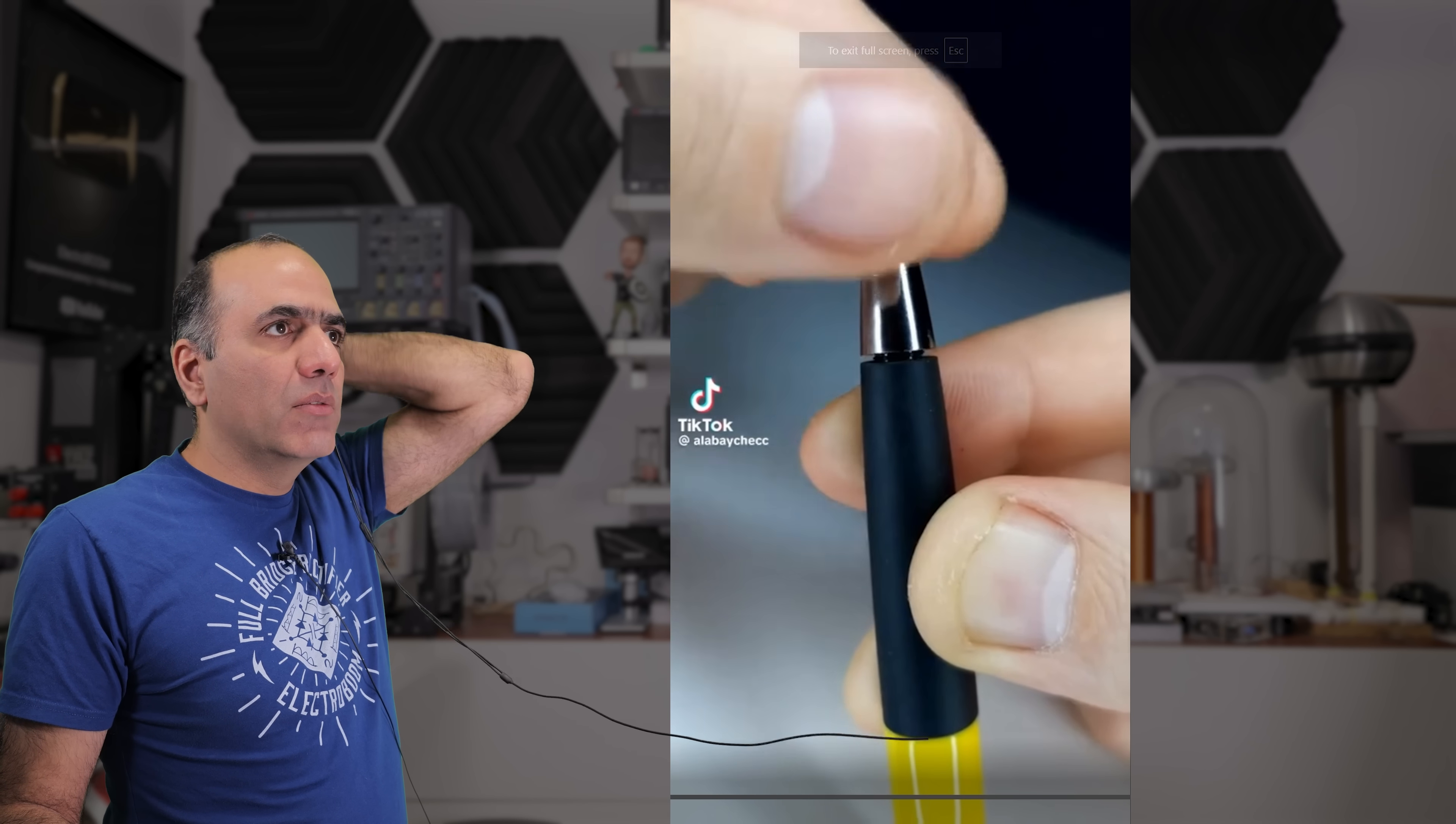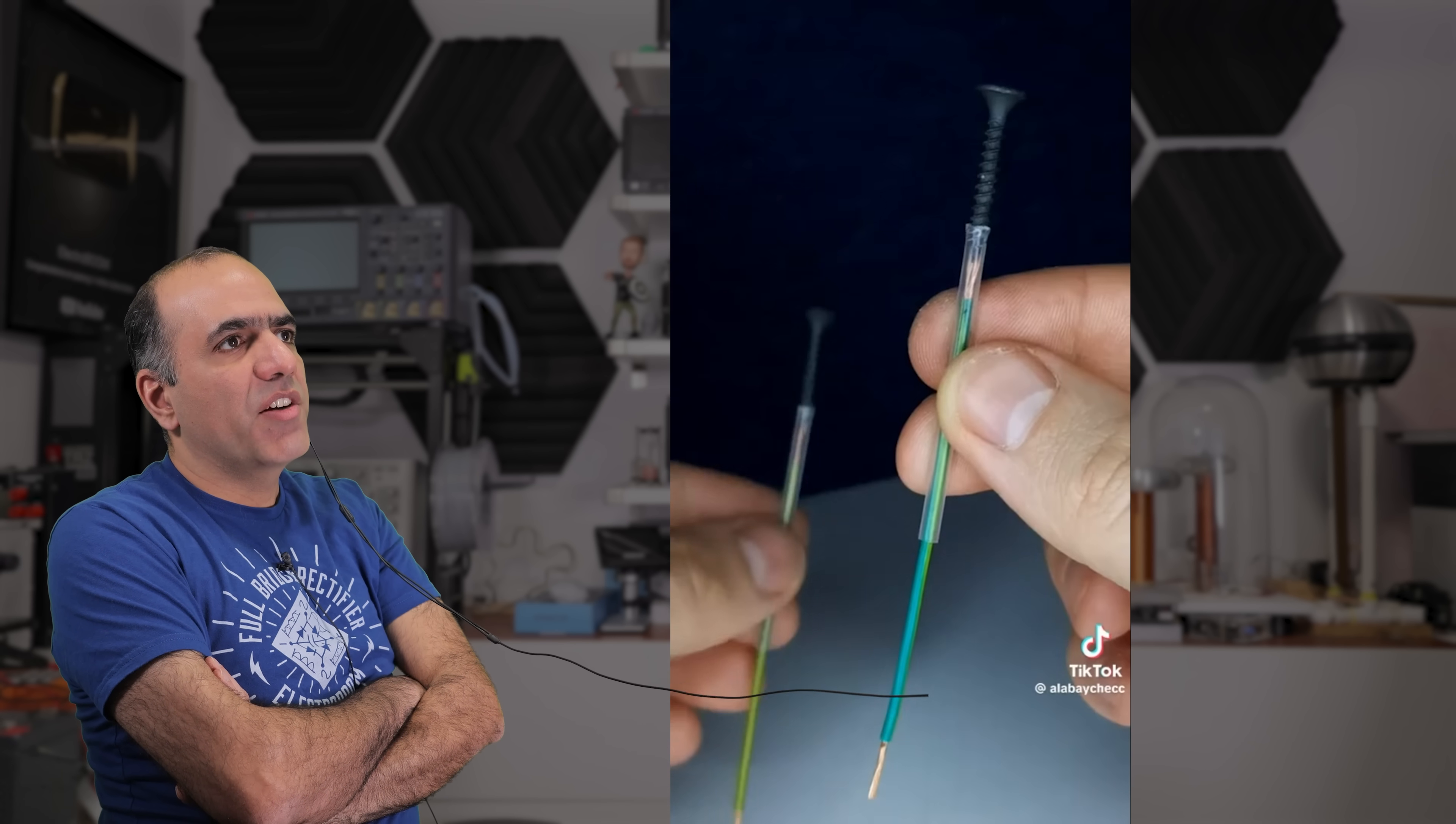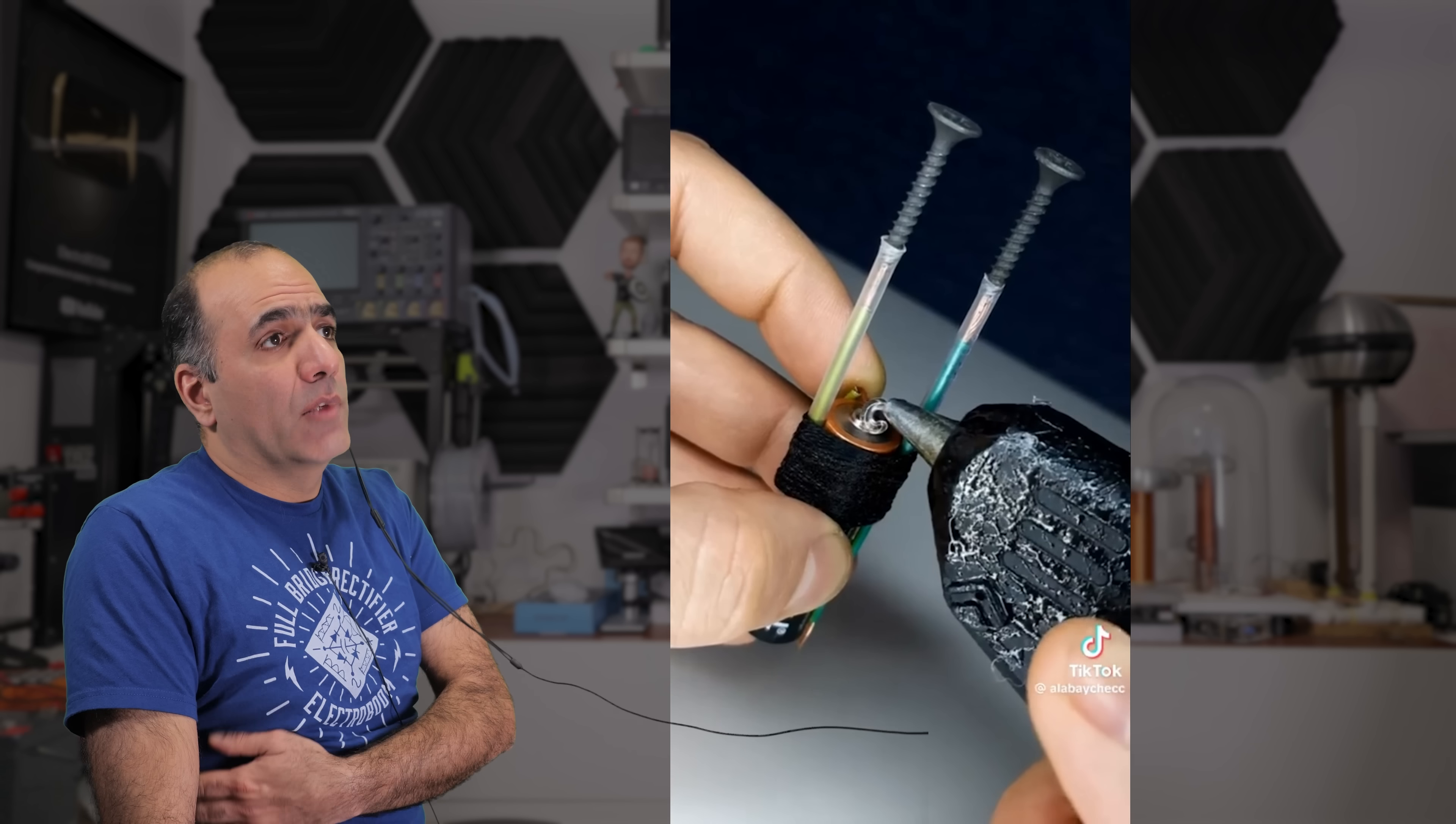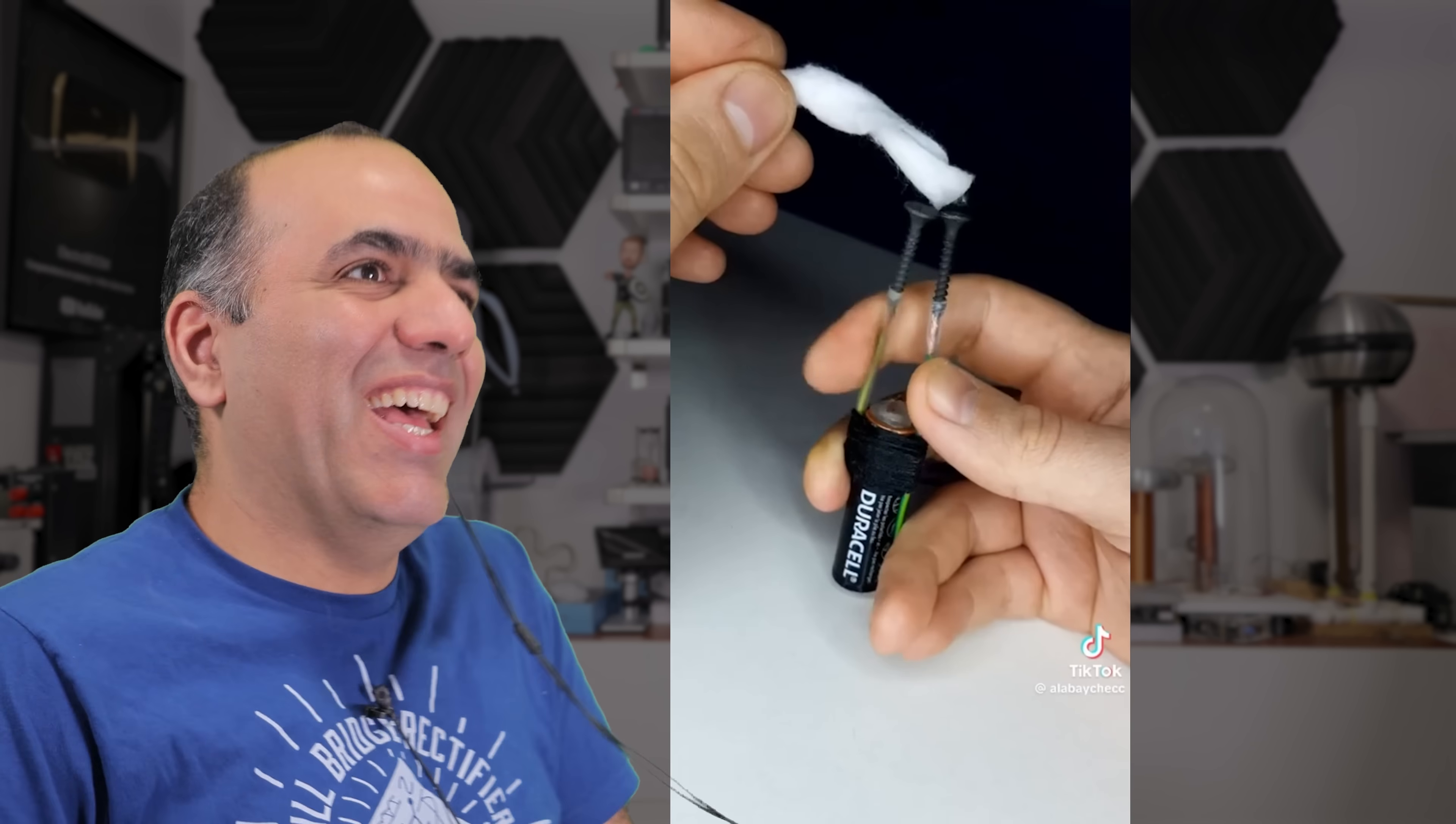But yeah some crappy made wall adapters can fail like that. Be careful. Take a look at this. What is he trying to make now? So he's putting some nails in the plastic pipes. Shove some wires in there to connect to the nails. Hot glues the end of the wires to the battery. What now?